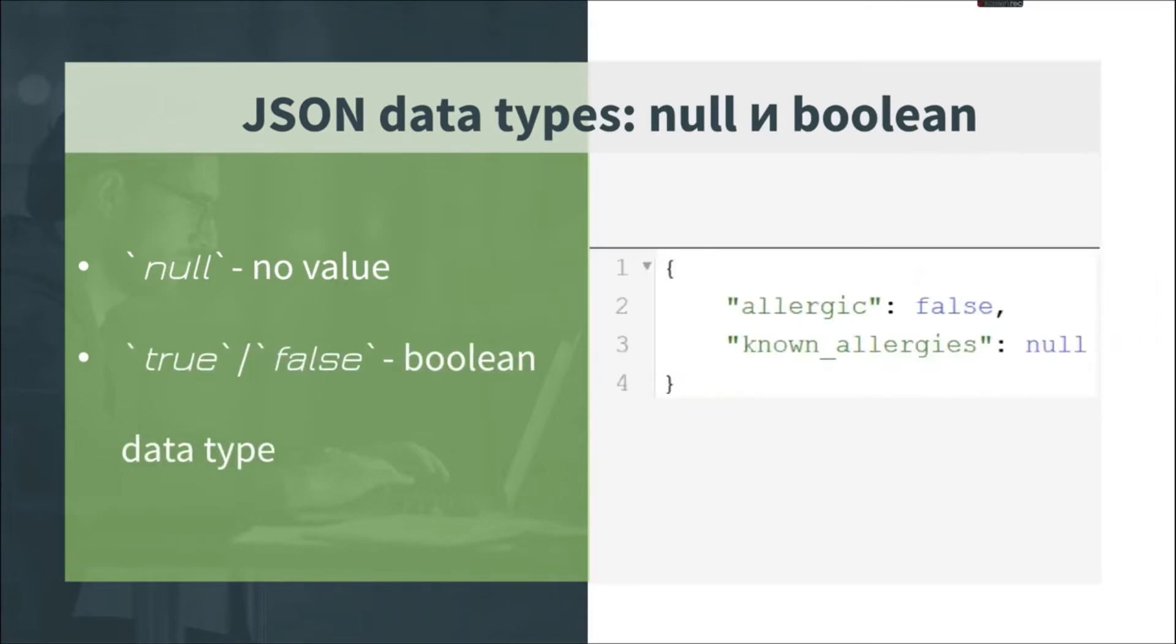Boolean type can have just two values, true or false. For example, allergic, colon, false for a patient who doesn't have any allergies.